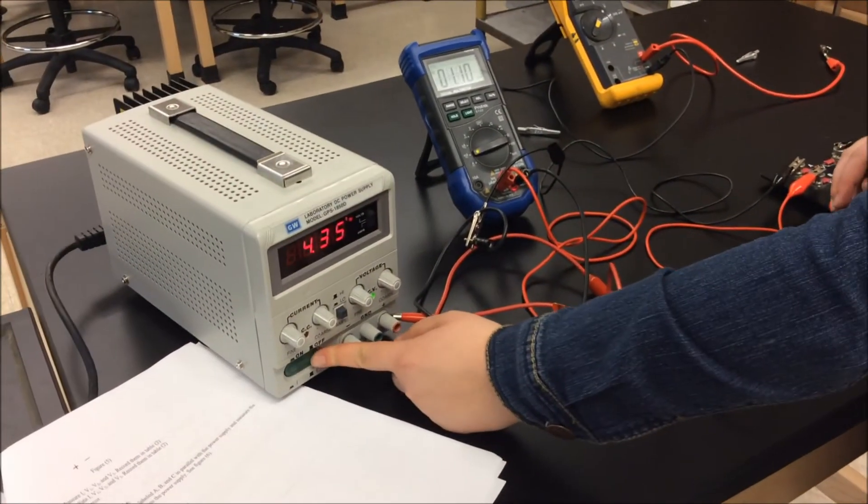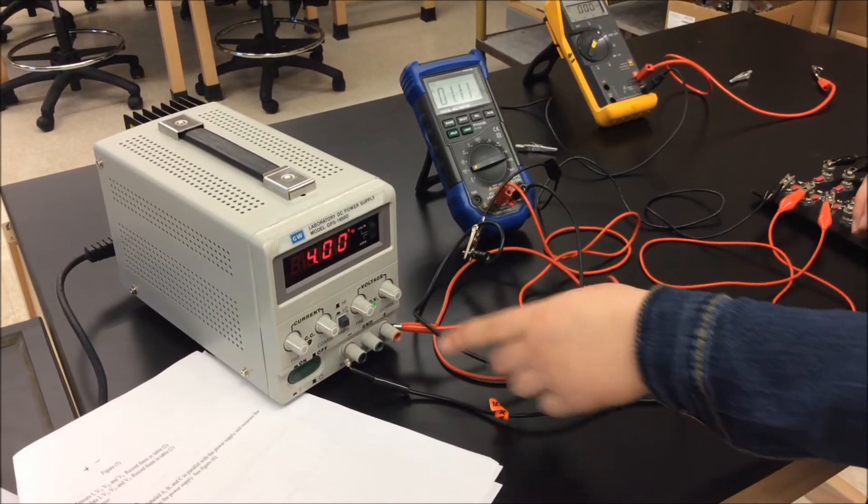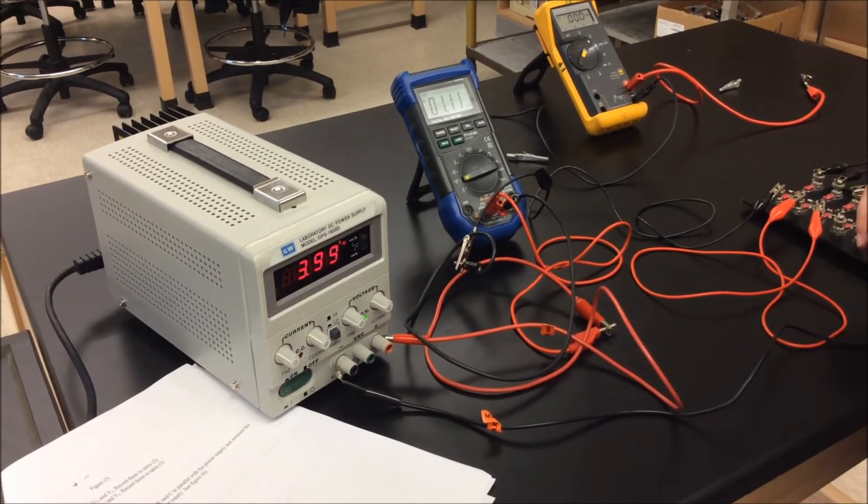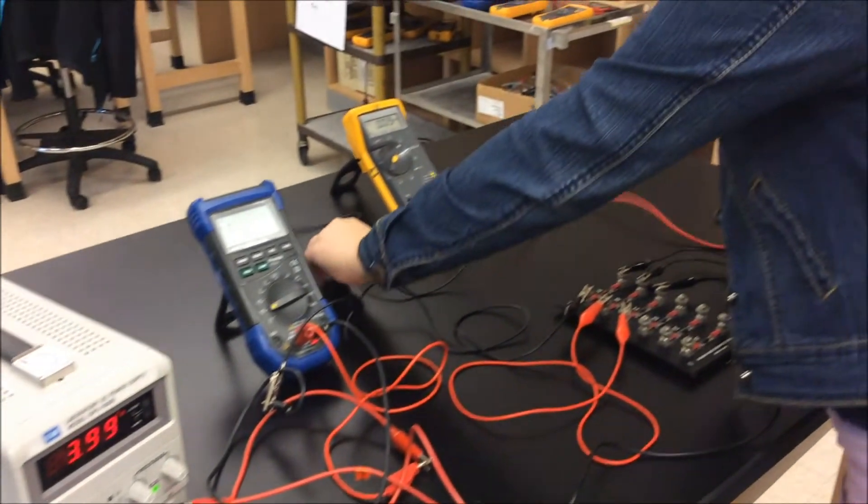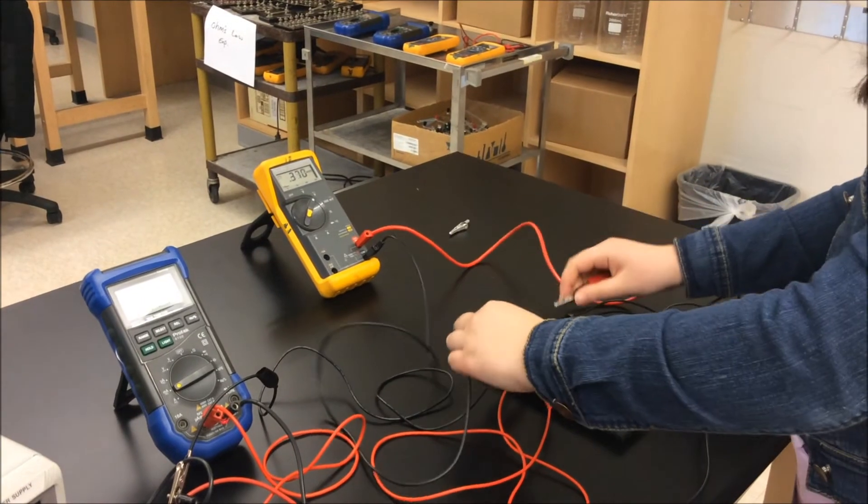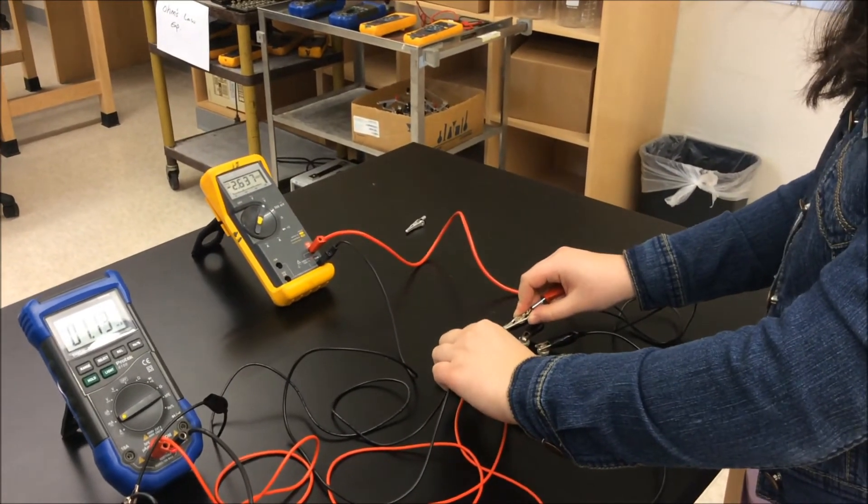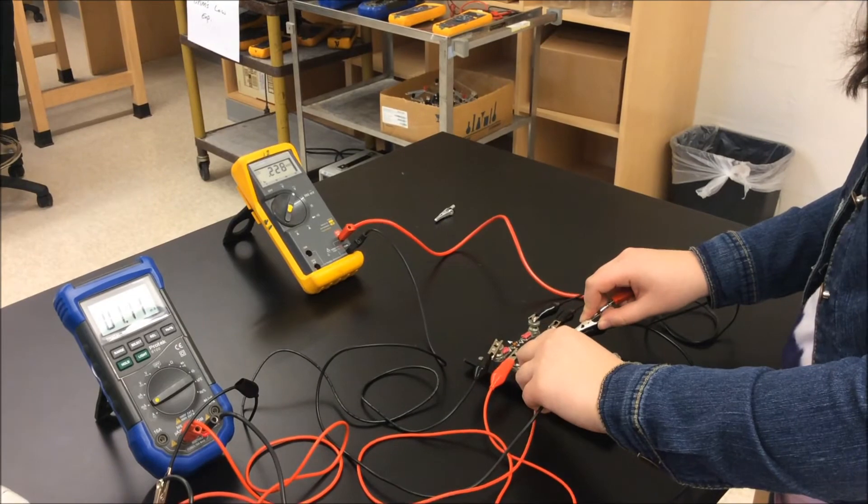Then you're going to turn the power supply on and set the voltage to about 4 volts. And to measure the voltage, you're going to measure the voltage across A, resistor B, and resistor C.